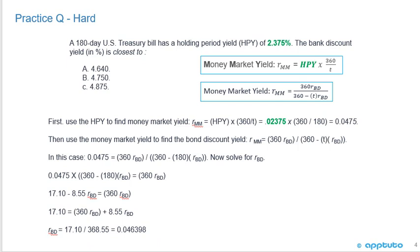The correct answer is A. The holding period yield is the connector between the various types of yields. So if they've given us the holding period yield, we can use that to calculate the money market yield. Recall the money market yield is the holding period yield times 360 over T. So that's 0.02375 times 360 over 180, which gives us a money market yield of 4.75%.